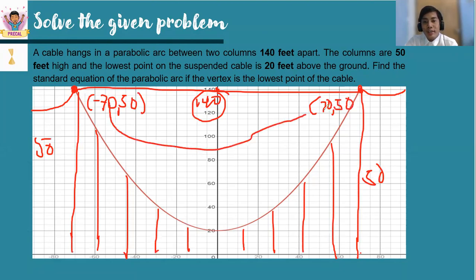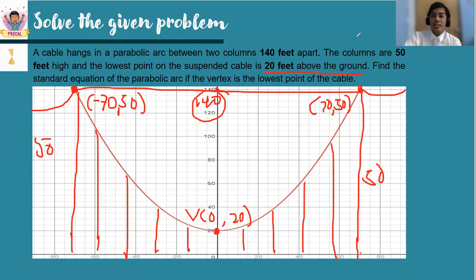And observe the vertex is located 20 feet above the ground. So therefore, the vertex is at (0, 20). Notice that the given parabola or suspension bridge is a parabola which opens upward. So therefore, we're going to use this as a pattern.